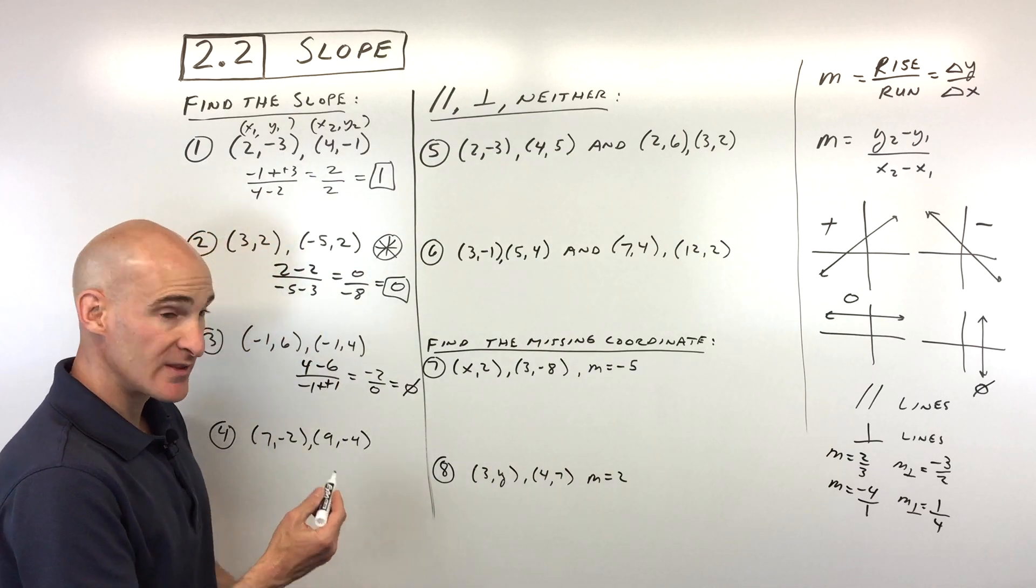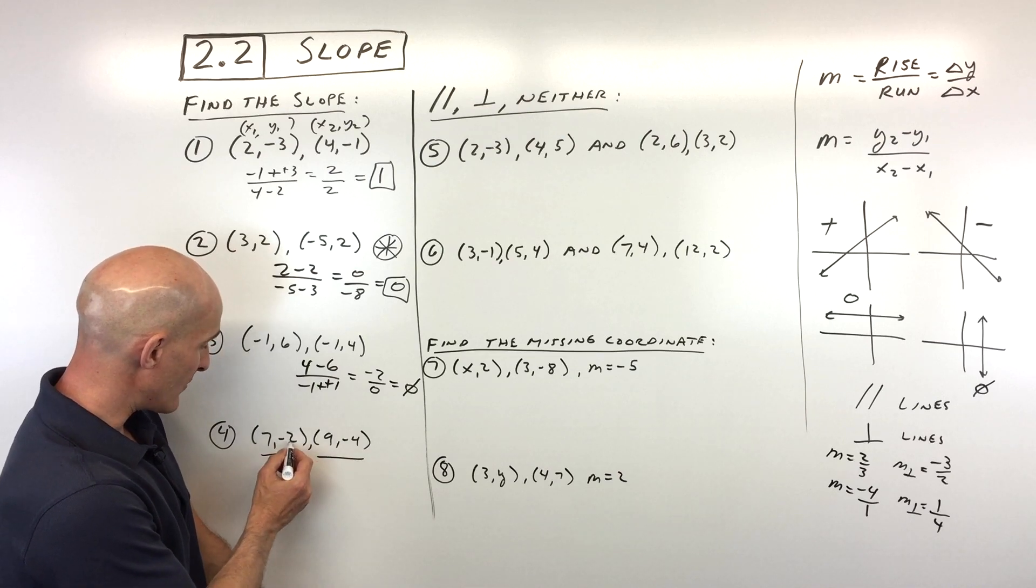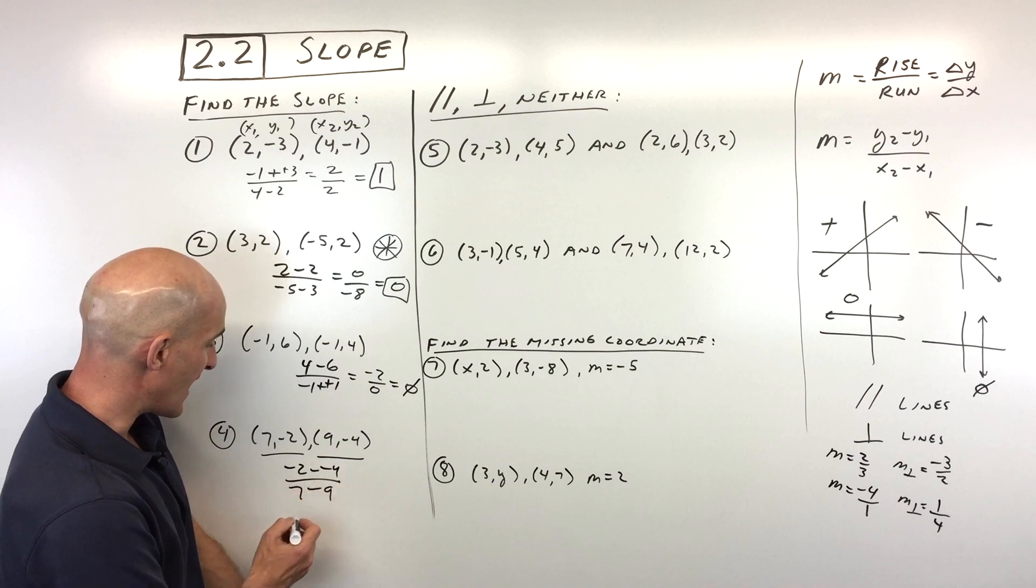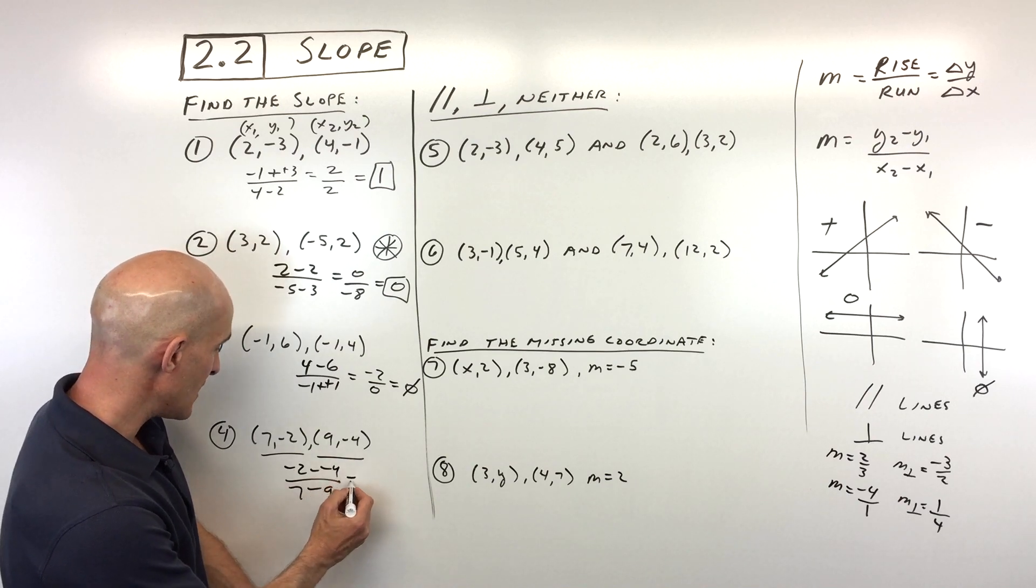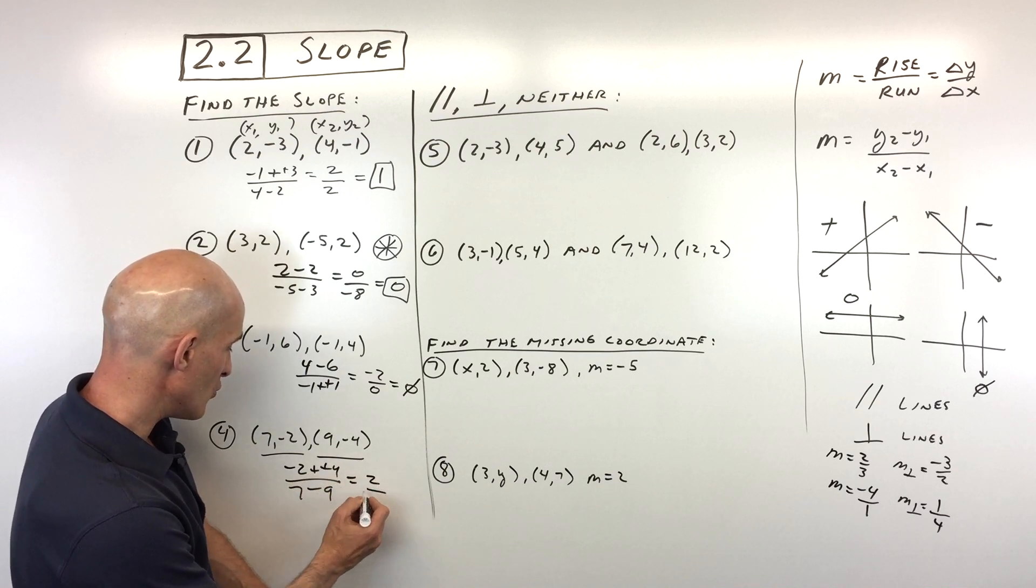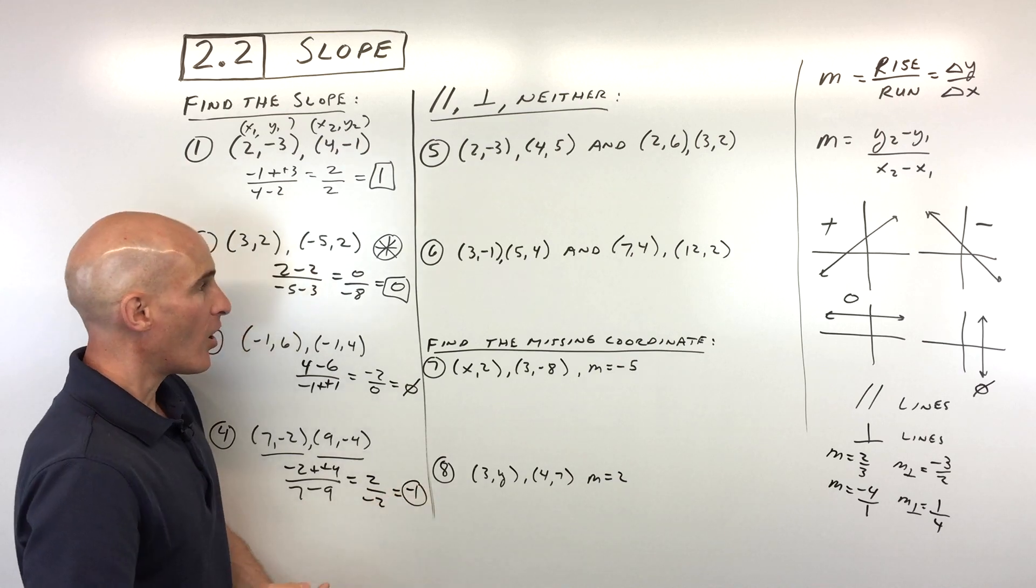Okay, so for number four, last one of these type, same idea. We're trying to find the slope between these two points. I'm going to reverse it this time. I'm going to do -2 minus -4 over 7 minus 9. Again, just staying consistent with the ordering. So that's going to be, let's see, that's going to be adding the opposite. So that's going to be 2 over 7 minus 9, which is -2. And here we get -1.